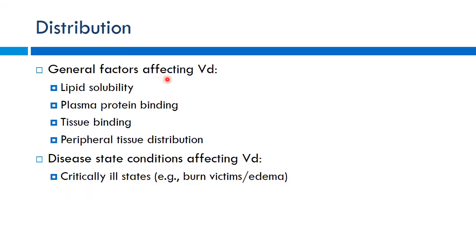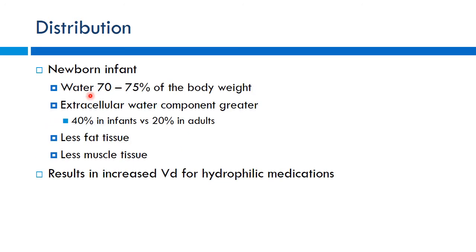Factors affecting volume of distribution include lipid solubility — highly lipophilic drugs tend to have higher Vd, but only if there is sufficient adipose tissue, which neonates lack. Plasma protein binding decreases Vd because drug bound to albumin in the serum cannot distribute to tissues. Tissue binding has the opposite effect. Disease states like burns or edema can also significantly affect Vd by shifting fluid compartments.